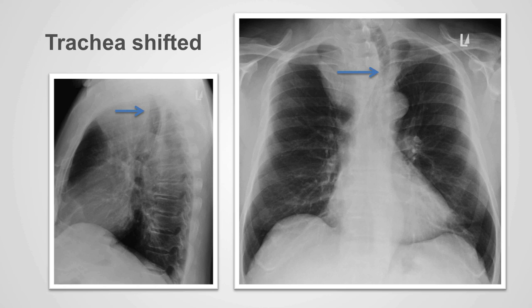Conversely, middle and posterior mediastinal masses, if large enough, will displace the trachea anteriorly.